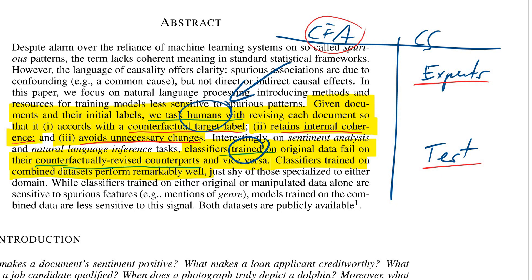If this counts as the same idea, then 95% of all research counts as the same idea as something Jürgen Schmidhuber did in the 1990s — which Schmidhuber will eloquently argue exactly that. He invented GANs. Basically the same thing. So it's not the same — it's very close, but it's not the same. And as I understand, they even cited the other work.